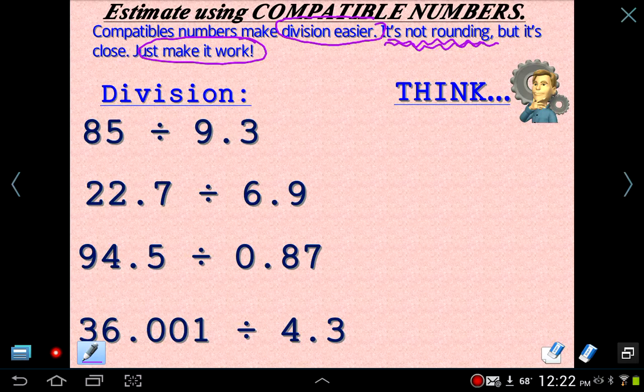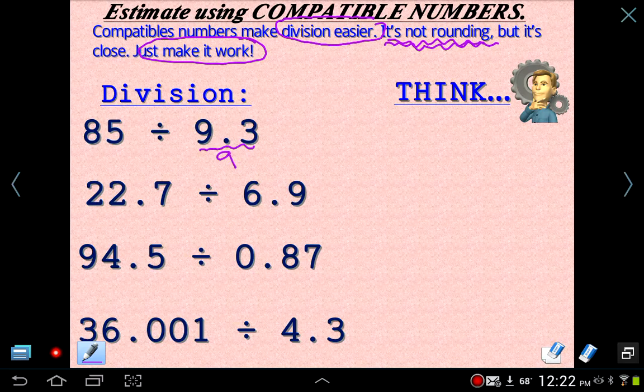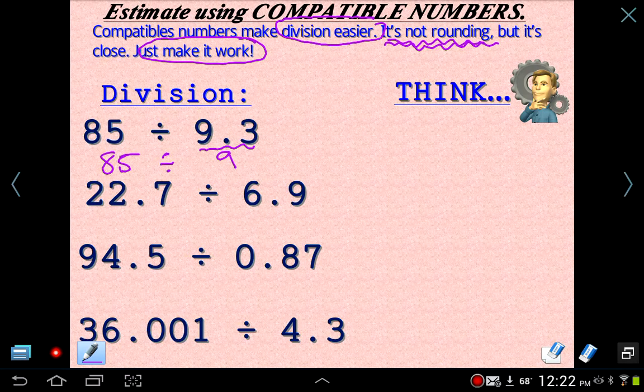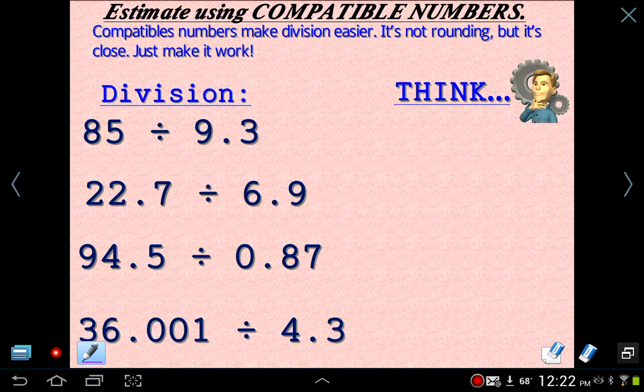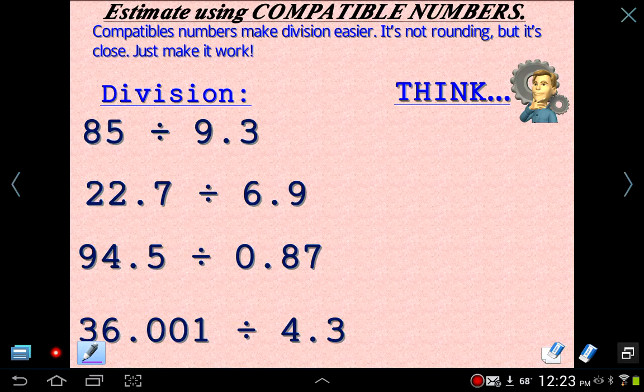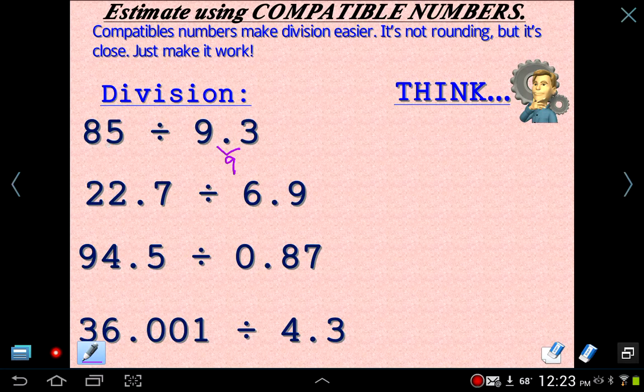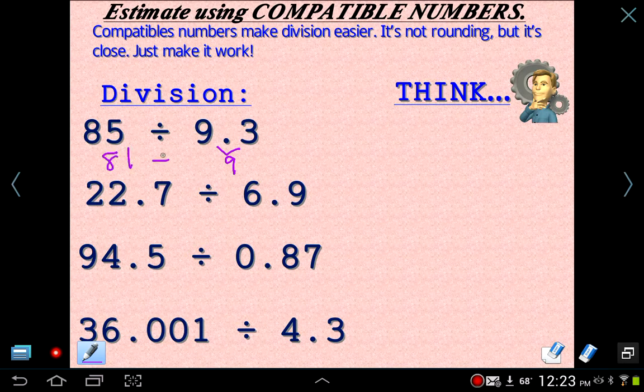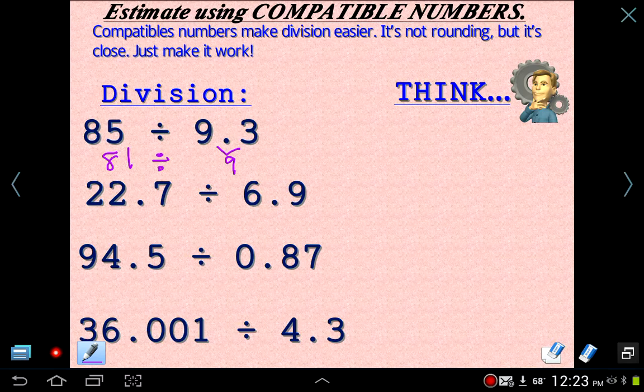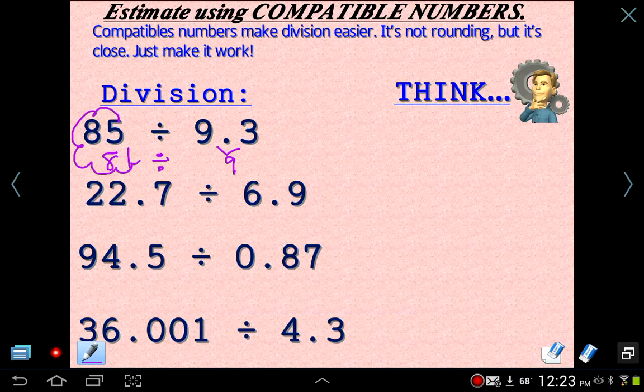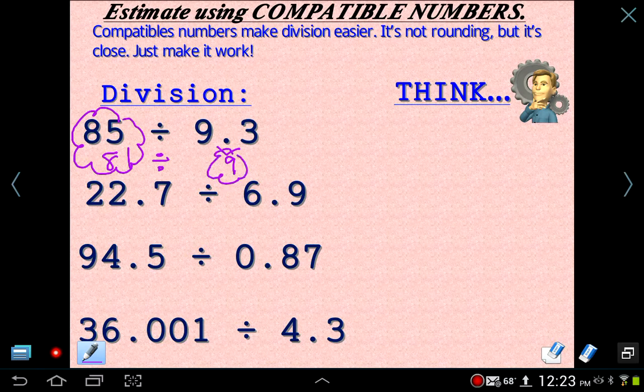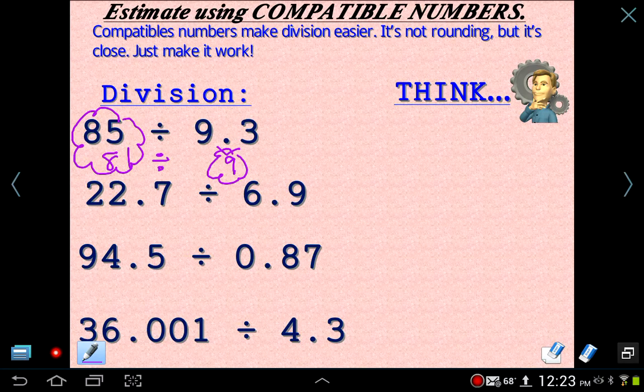So with compatible numbers, we want to make the numbers work. Now, if I were to just round this, if I were to round 9.3, that would be 9. And that still doesn't work out. 85 doesn't divide by 9 cleanly. It doesn't divide by 9 evenly. So I want to make it work. I'm going to be a little bit creative here. I don't want to do too much to change it. But I notice that if I change this to 9, which is rounding, basically. But if I change 85 to, for instance, 81, that works out really nicely. 81 divides by 9 evenly. I know that. So 85 obviously didn't round. We didn't round it to 80. We didn't round it to 90. I just changed it into a number that 9 can divide by. That's called compatible numbers. We made them compatible. 89 or 81 and 9 are very much compatible with each other. So 81 divided by 9 is 9.